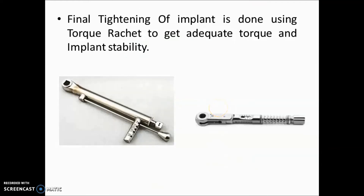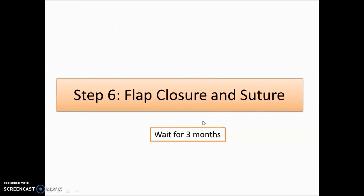Final tightening of the implant is done using a torque ratchet to achieve adequate torque and implant stability. There are two kinds of torque ratchet: one with variable torque values of 0, 15, 25, 35, and 50, and one with a fixed torque value. Know the difference between these two types.